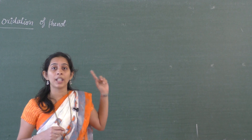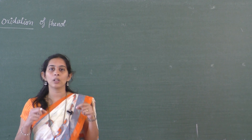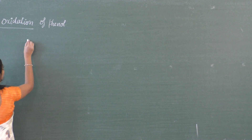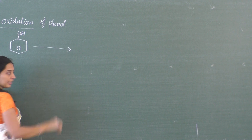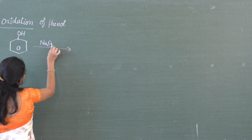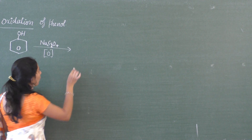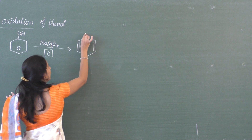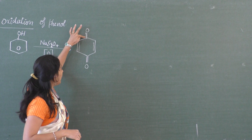In today's class we have to discuss the oxidation of phenol. When phenol undergoes oxidation, it always forms a diketone. Oxidation in the sense oxygen is needed, in the presence of Na2Cr2O7, sodium dichromate. So sodium dichromate oxidation takes place. The product we are going to get is a diketone, where two oxygen atoms are connected in para position.